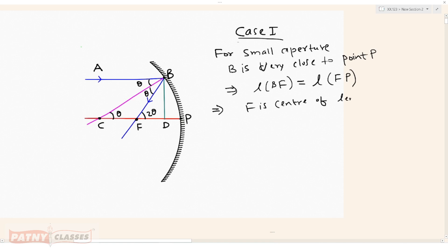CP is nothing but FP plus FC. CP equals FP plus FP, which implies CP equals 2FP, which implies CP equals 2F.